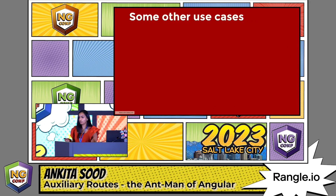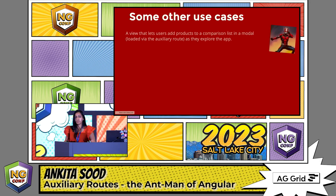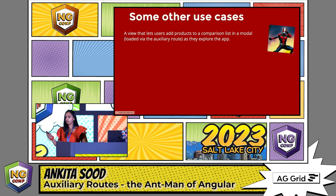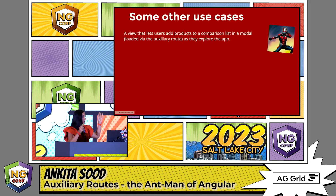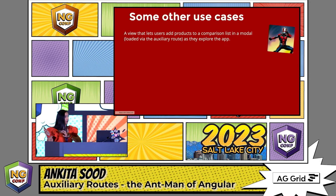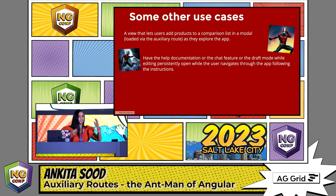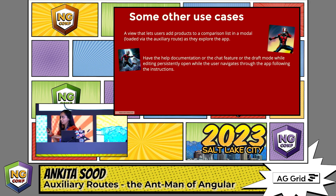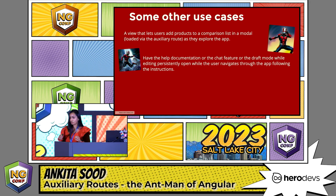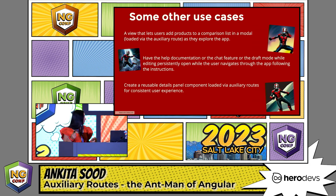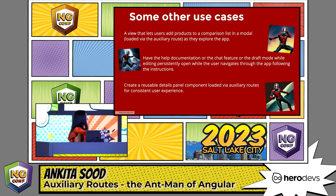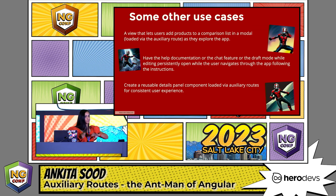That was a really simple, straightforward use case for auxiliary routes. Some more use cases could be a comparison mode that loads up as your user is navigating between different products and they want to keep adding items. Or you can have your help, chat, or any other feature consistently showing in an auxiliary route as your user navigates between different routes — an effective way to create a consistent user experience with a details panel in your app.